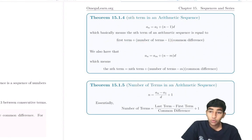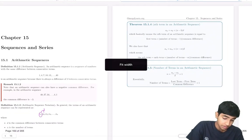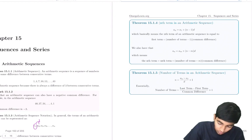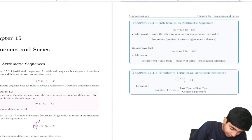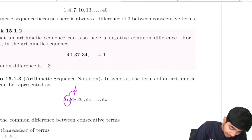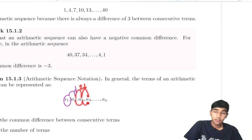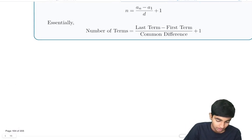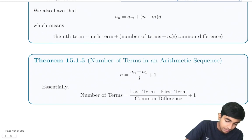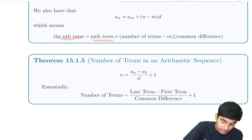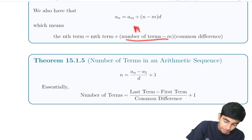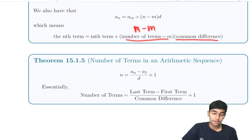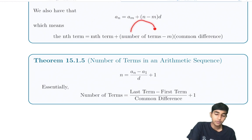We can also express the nth term in terms of other terms of the arithmetic sequence. For example, a4 is going to be 2d more than a2, because there are two differences between a2 and a4. The nth term is the mth term plus (n minus m) times the common difference. So you just look at the number of terms in between, multiply by d, and add to the earlier term.